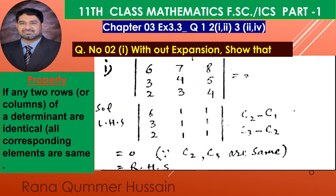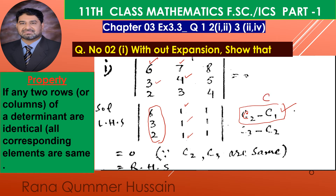Let's see the technique. We keep column number one the same with no changes. Then we perform the operation: column 2 minus column 1. The first element of column 2 is 7, and column 1 has 6, so 7 minus 6 gives 1. Then 4 minus 3 gives 1 again. Then 3 minus 2 gives 1 again. So column 2 becomes all ones.